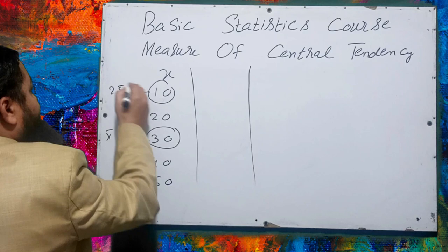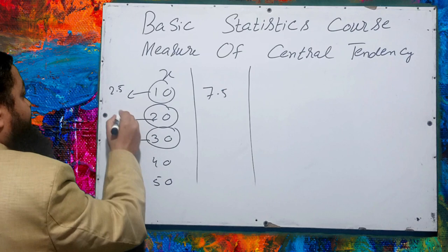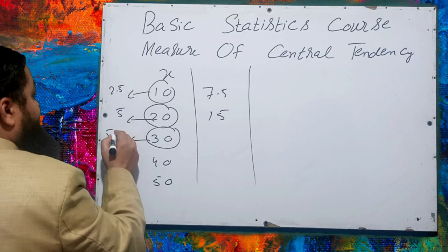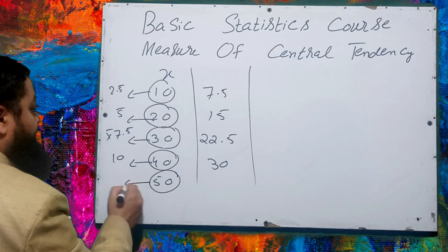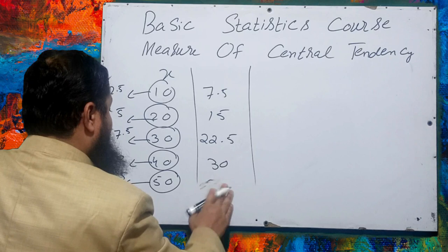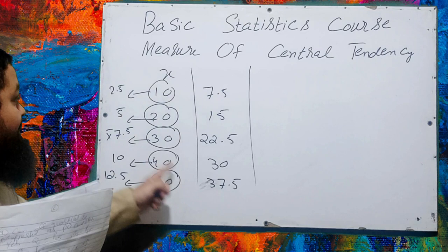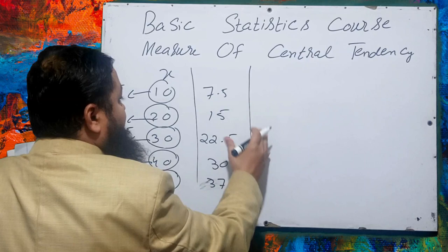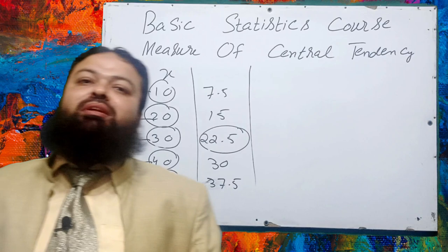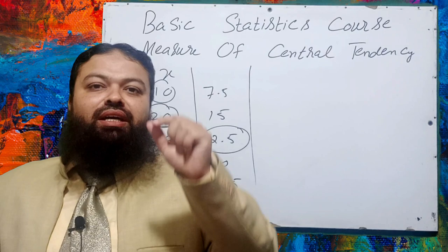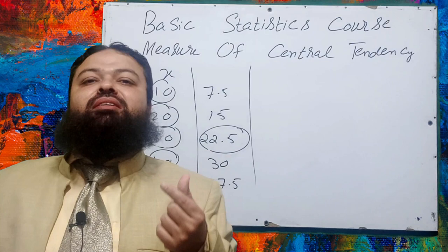If we decrease each value by 25%: 25% of 10 is 2.5, so 10 minus 2.5 is 7.5; 20 minus 5 is 15; 30 minus 7.5 is 22.5; 40 minus 10 is 30; 50 minus 12.5 is 37.5. The mean of the original data is 30, and the mean of the decreased data is 22.5 — which is exactly 25% decreased. This rule applies to geometric mean, harmonic mean, and median as well.